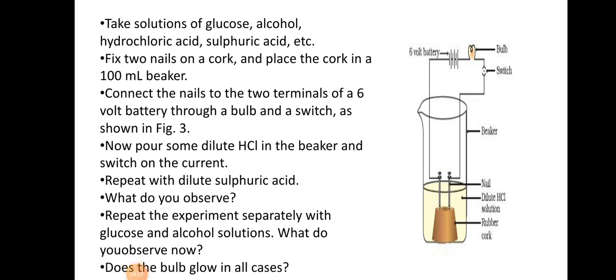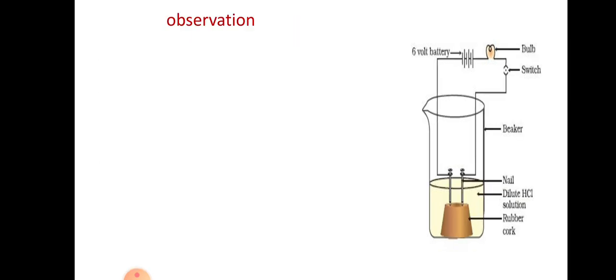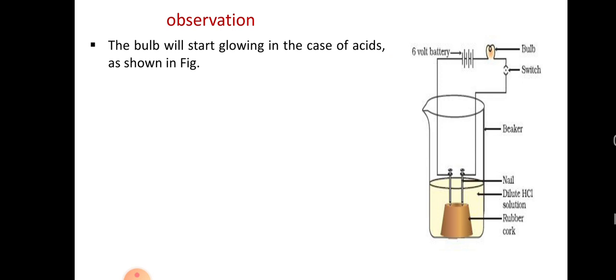Now, what do you observe? You have to repeat this experiment separately with glucose and alcohol solutions also. We are checking all four substances — glucose, alcohol, hydrochloric acid, and sulphuric acid — to see whether they are good conductors of electricity or not. The first observation is that the bulb starts glowing in the case of acids. When we use dilute HCl, the bulb glows, meaning it is a good conductor of electricity.